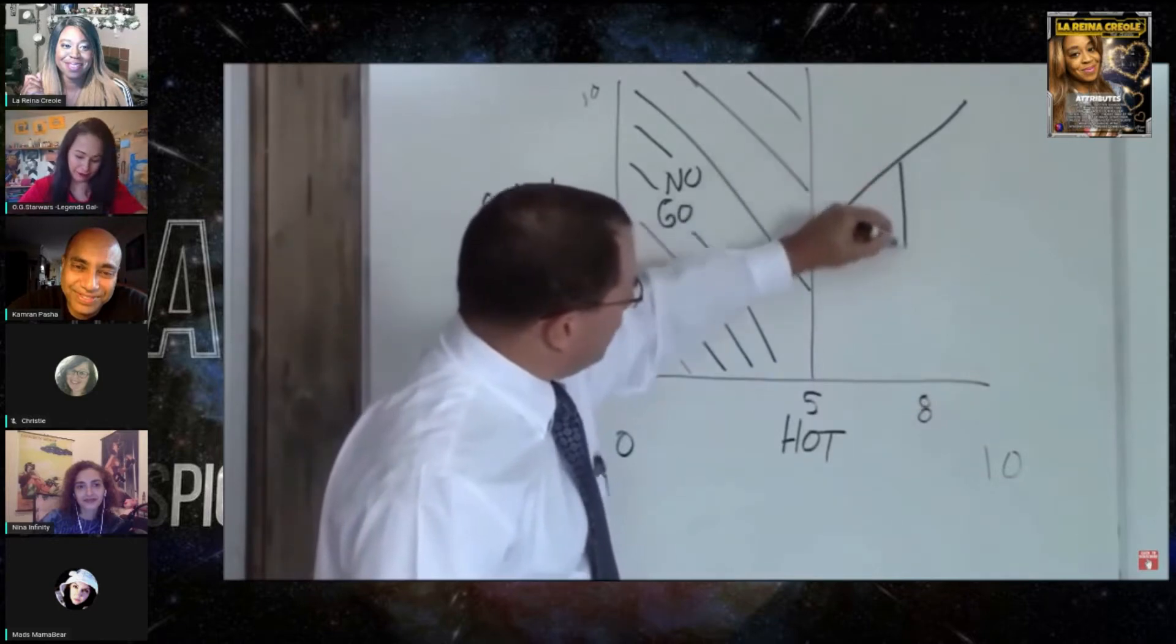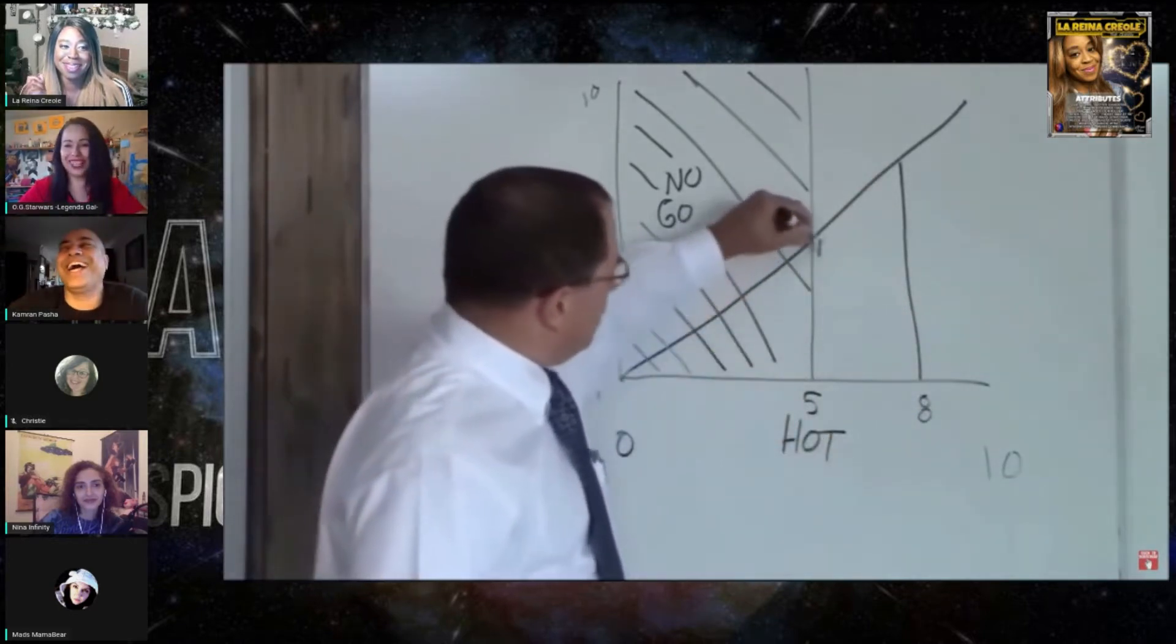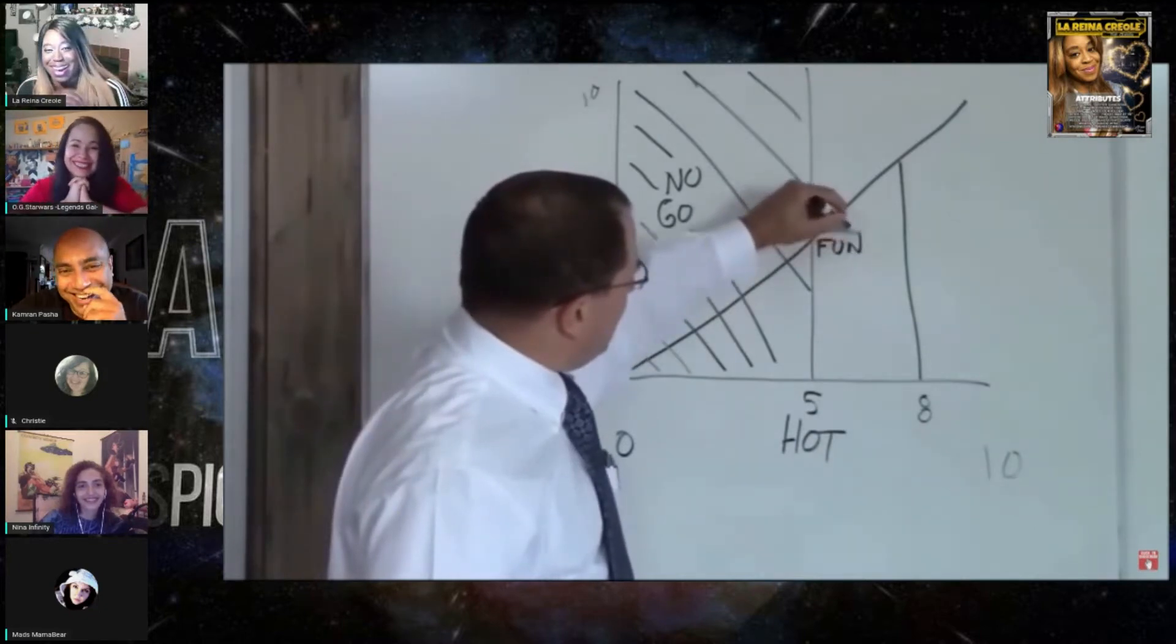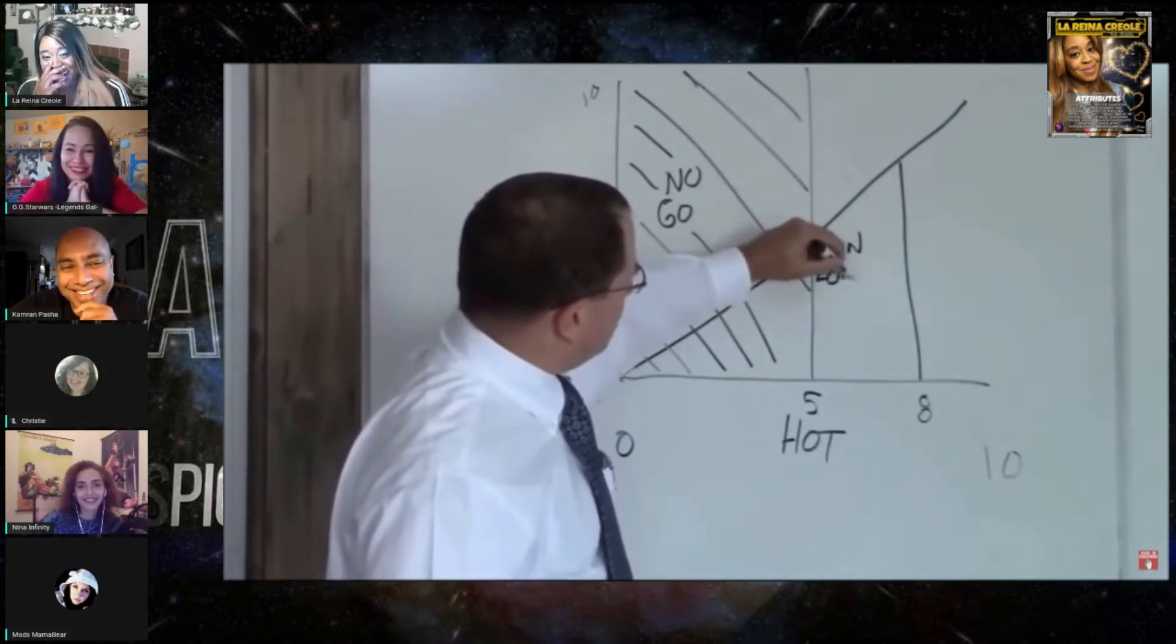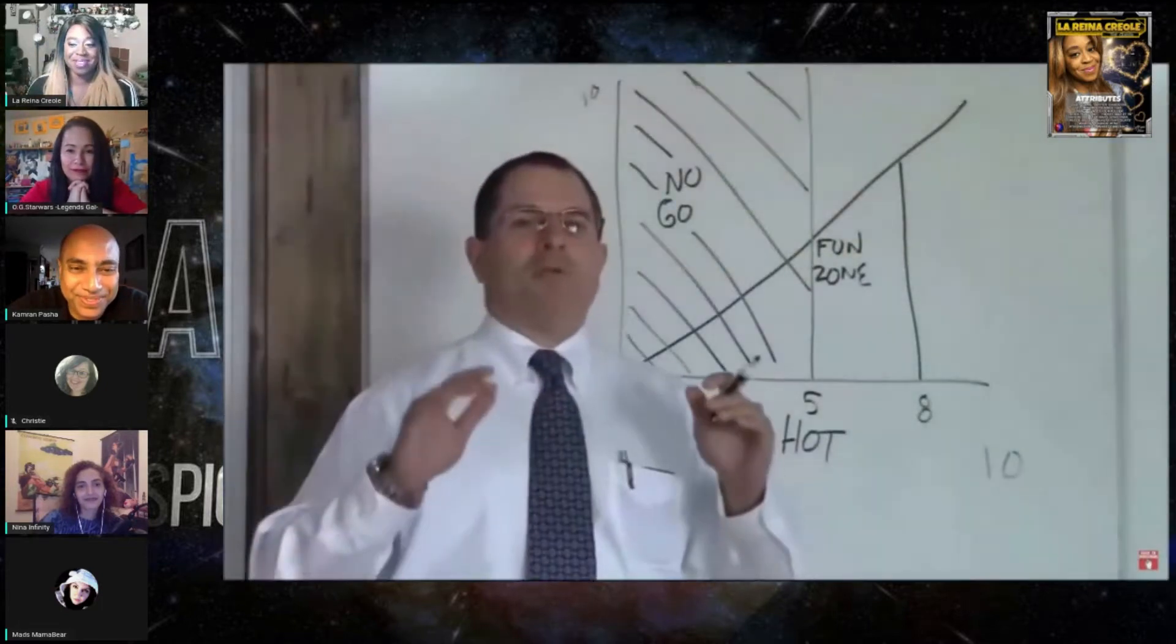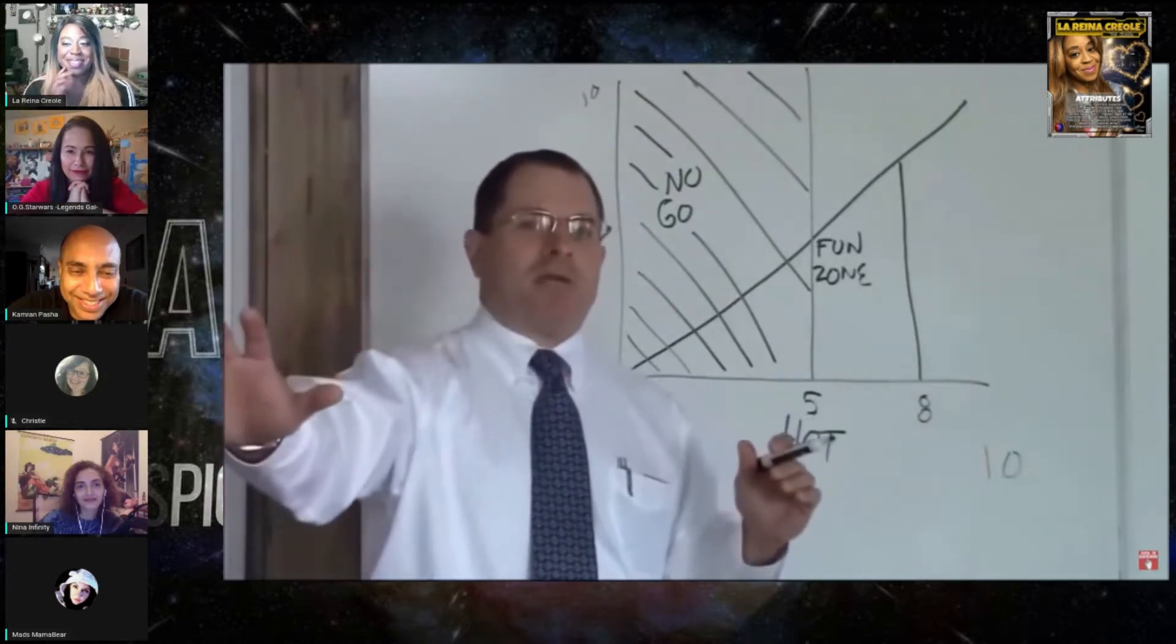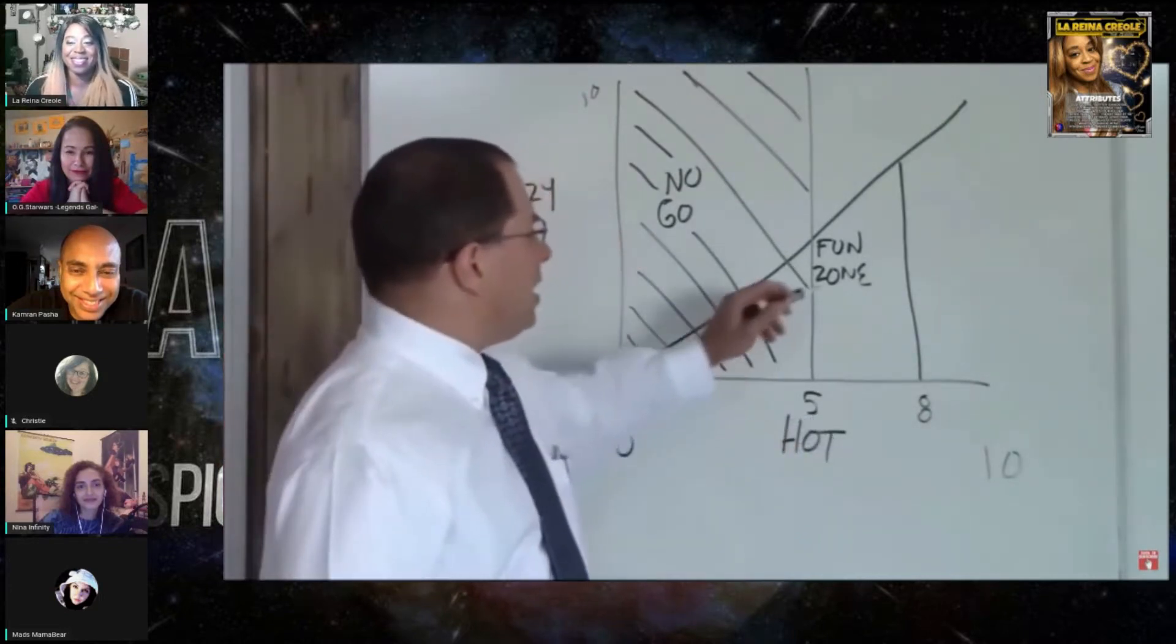Above a five and to about an eight, and below the crazy line, this is your fun zone. You can meet these girls and spend time with them. But keep in mind when you're in the fun zone you want to move out of the fun zone to a more permanent location.